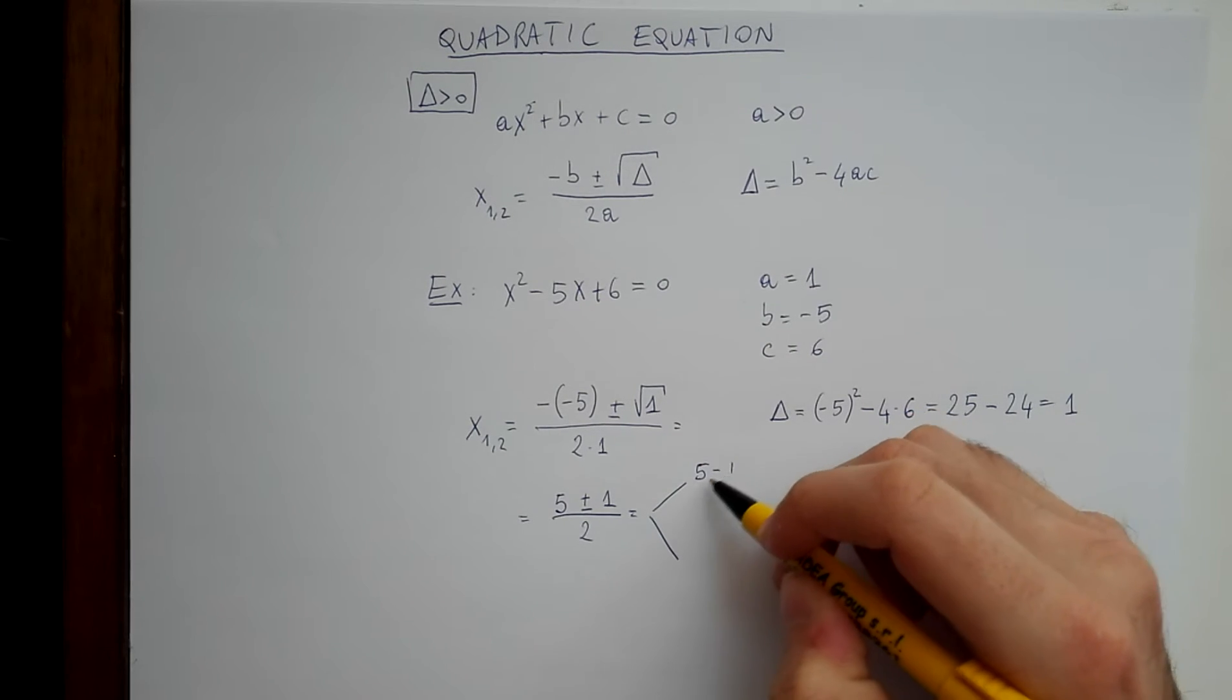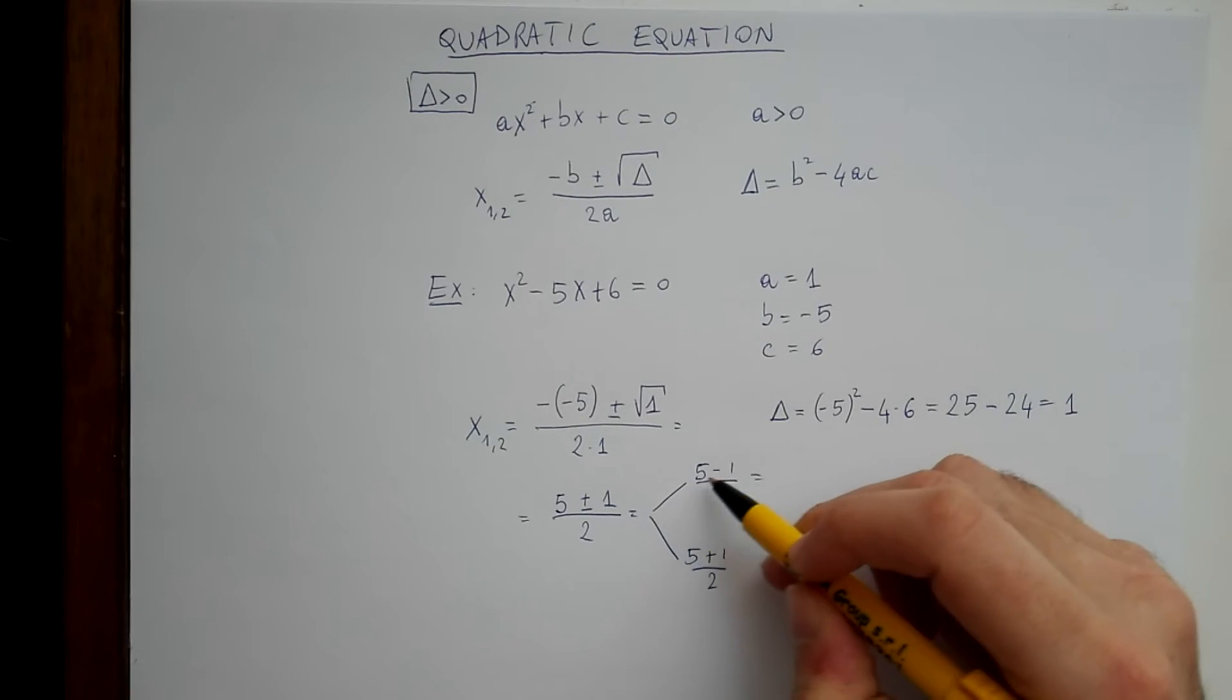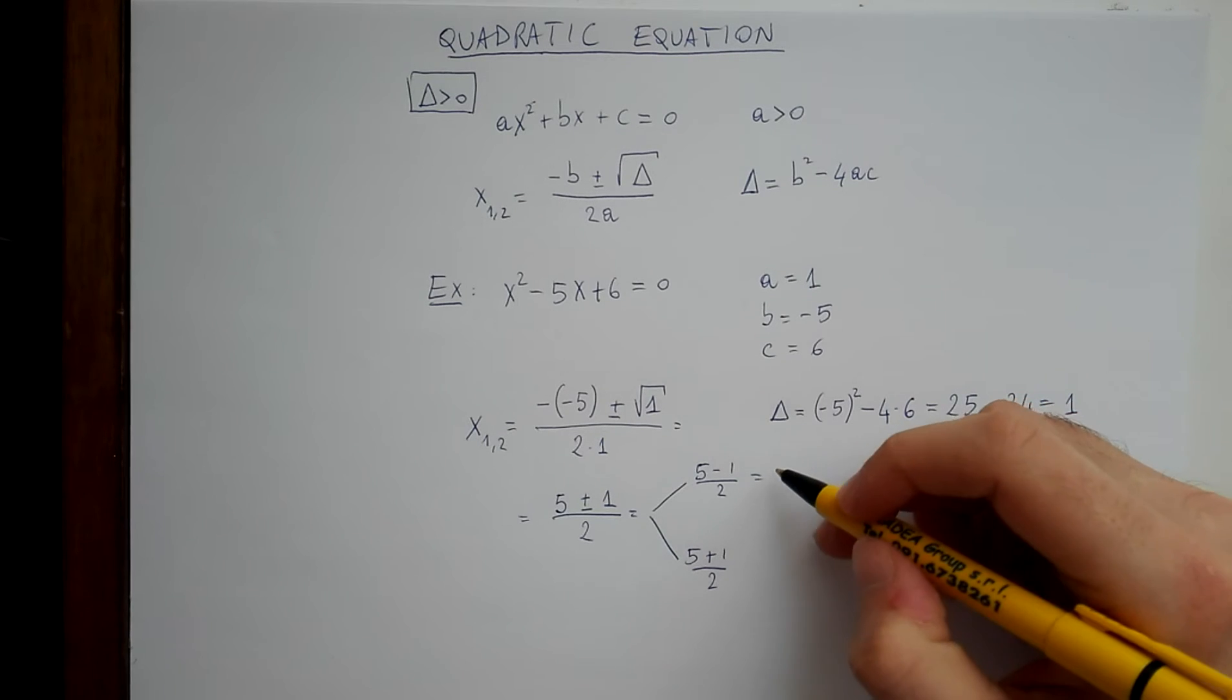So 5 minus 1 over 2, so 5 minus 1, 4, divided by 2, 2,